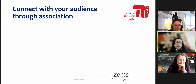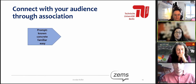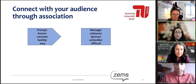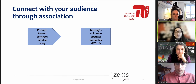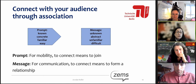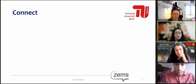In the previous slide, I've implicitly introduced one of the basic strategies for communication: connecting through association. What I've done is start by introducing a prompt — one piece of information which can be known, concrete, familiar, or easy — and then I add another piece of information, the message I want to send. This message might be unknown, abstract, unfamiliar, or difficult to understand. That's especially the case when dealing with scientific or technical topics. By beginning with a prompt, you make your message more accessible and user-friendly to your audience.